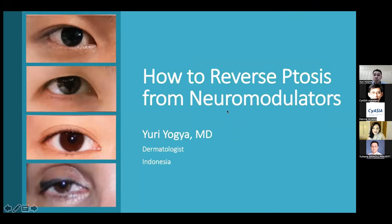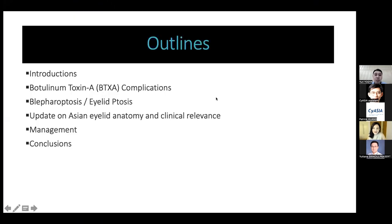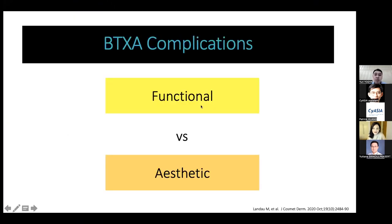This is from the neuromodulators. The outline of the presentation: botulinum toxin complications can be divided into functional and aesthetic complications. Functional complications affect general health or distort activity. In aesthetic complications, either the aesthetic goal is not achieved, or there is imbalance or new distortion created in the patient's appearance.